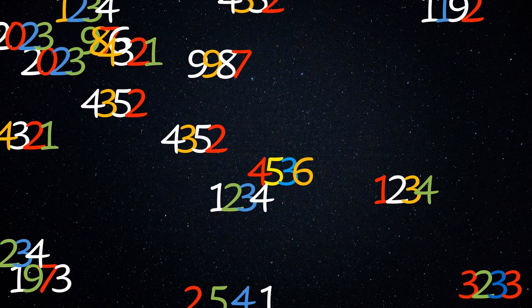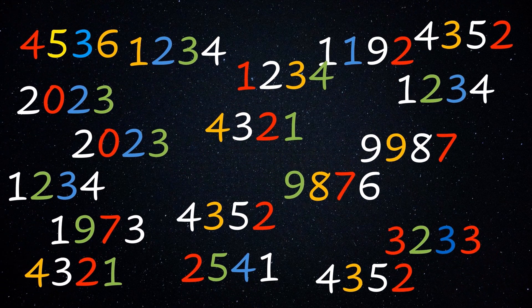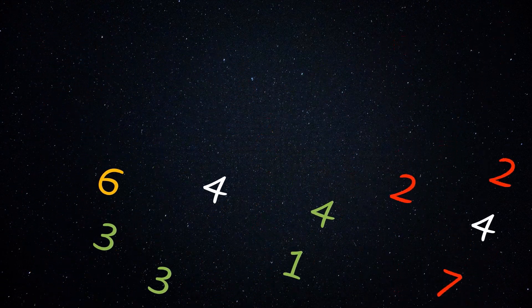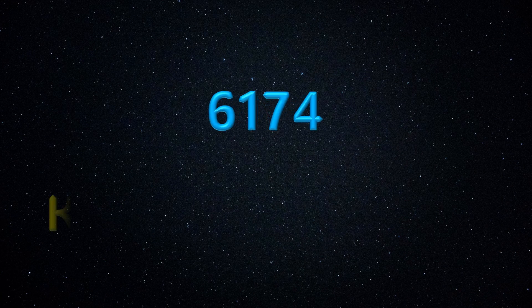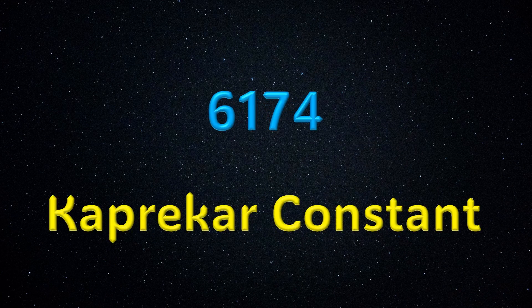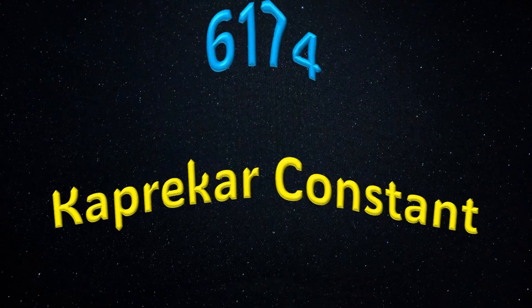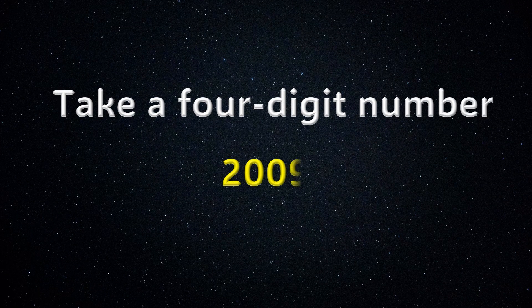From the world of four-digit numbers we take a special number: 6174, called the Kaprekar constant. Let's investigate what is special about this constant. We take a four-digit number, 2009.